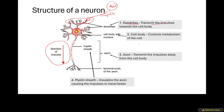The cell body controls the metabolism of the cell — it is the one making the neuron function properly. The impulse travels through the dendrite towards the cell body, and when it reaches the cell body it continues and travels through the part called the axon. The axon transmits the impulses away from the cell body. We also have another part called the myelin sheath, which surrounds and covers the axon.